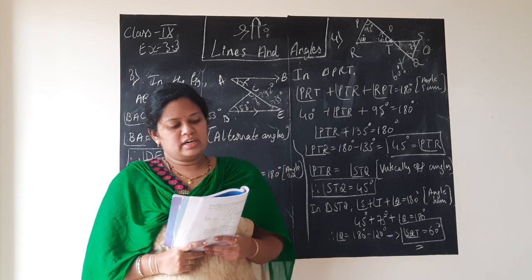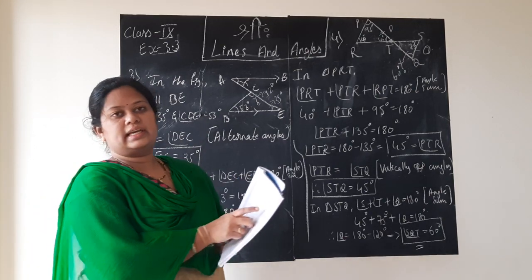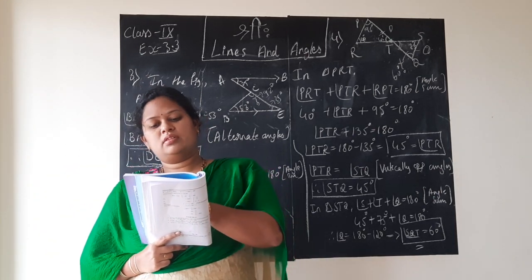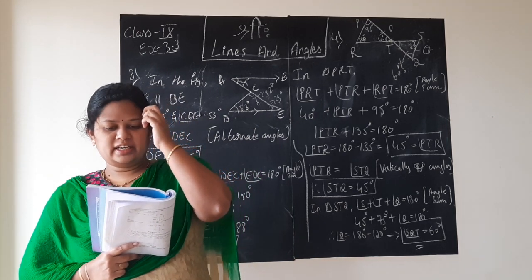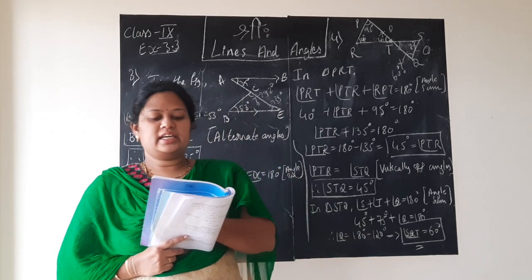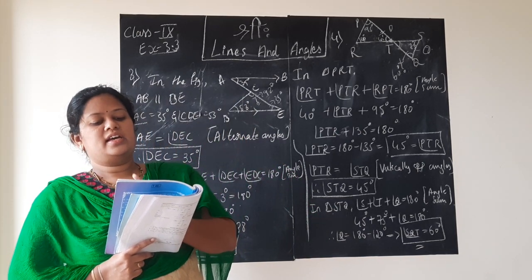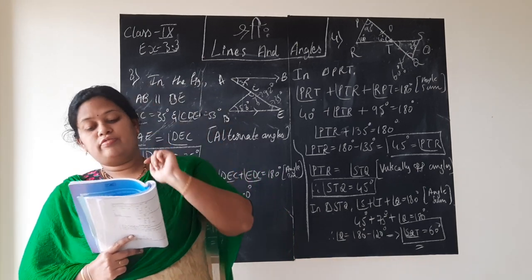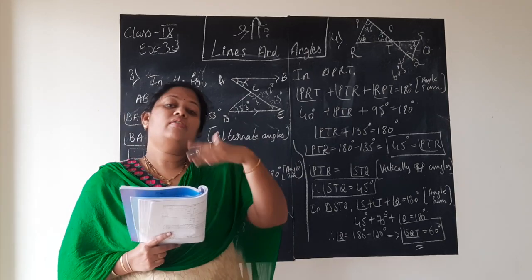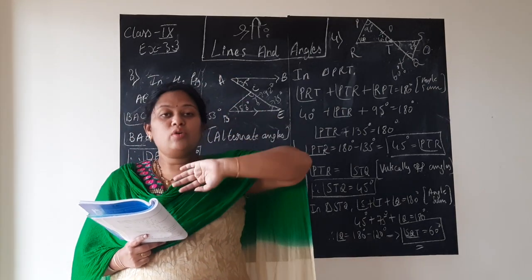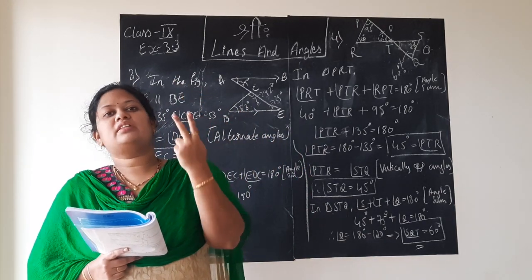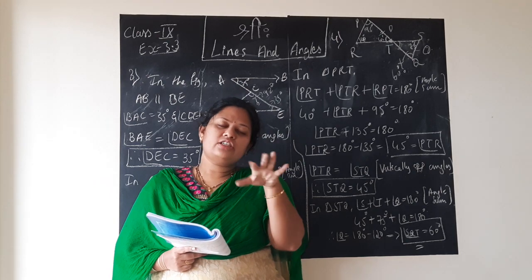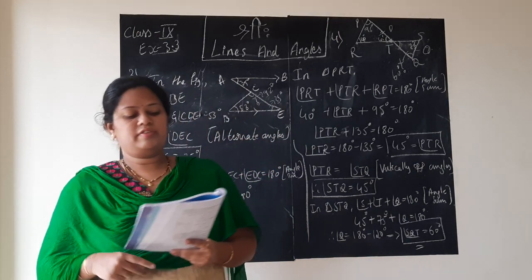Fifth problem, I think you can do it, children — take it as homework. In figure 3.43, if PQ is perpendicular to PS, meaning angle P is 90 degrees, and angle SQR is 28 degrees, QRT is 65 degrees, find the values of X and Y. You can apply angle sum property, exterior angle equals interior opposite angles, and alternate angles. Think about how to find unknown angles using given angles — apply alternate, corresponding, linear pair, and angle sum property concepts.